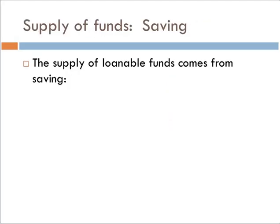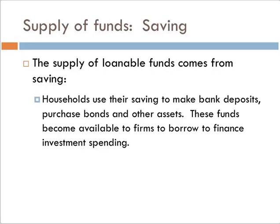Now let's think about the supply of loanable funds. The supply of loanable funds is savings. If we don't spend it, we save it, and that savings goes into the financial system, which then lends it to other people. Households use their savings to make bank deposits, purchase bonds, and other assets. These funds become available to firms to borrow to finance investment spending.